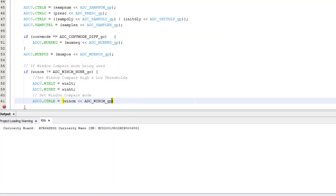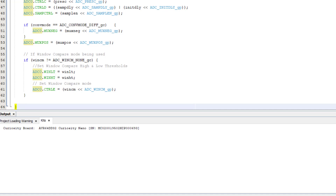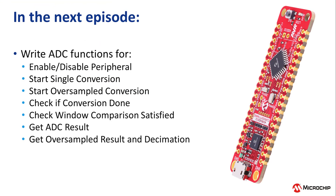So that's the initialization done. We will also need some other functions to control things like enabling and disabling the ADC peripheral, starting a single ADC conversion, starting an oversample conversion, checking if a conversion is done, checking if the window comparison setting has been satisfied, getting the ADC result, and getting the oversample result and performing decimation. We will cover all of those as well as the application code in the next episode.